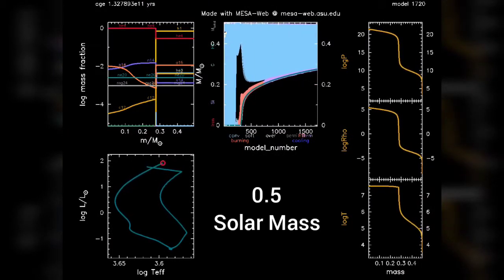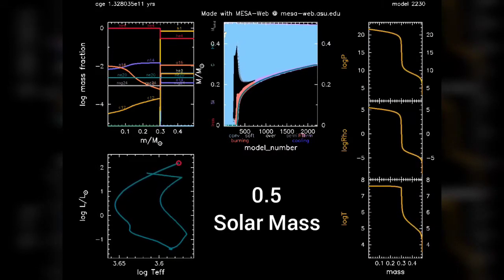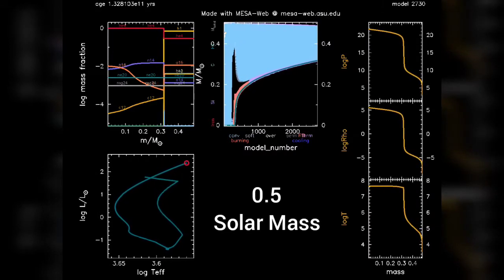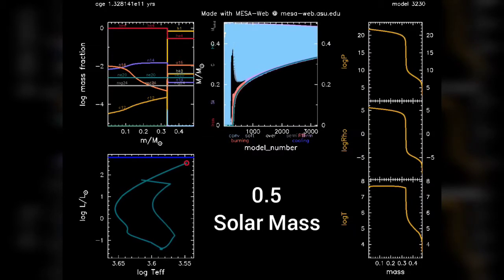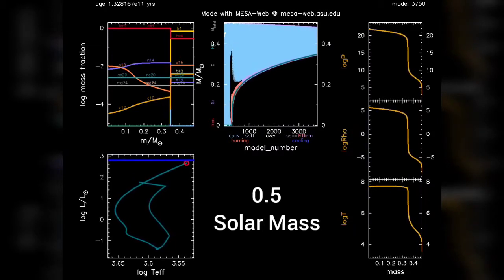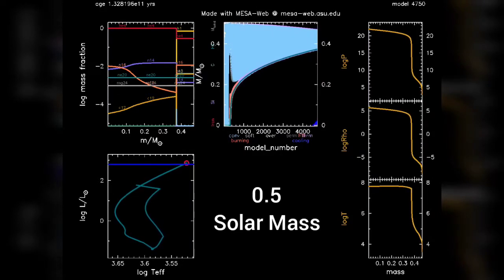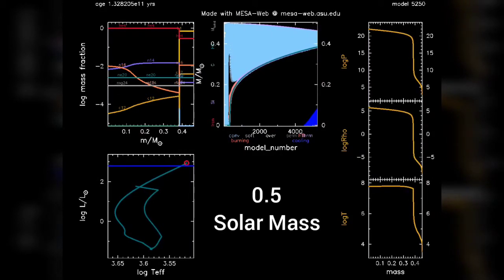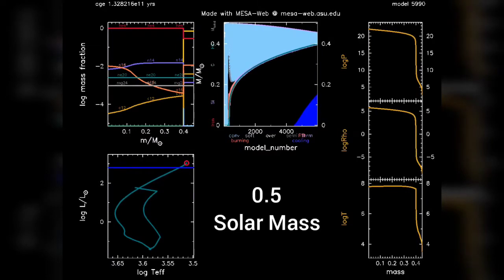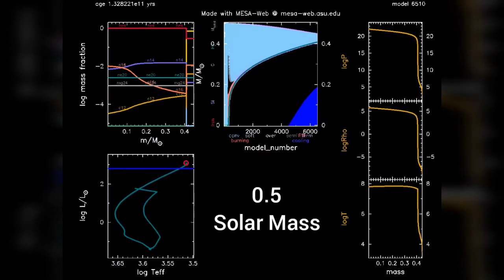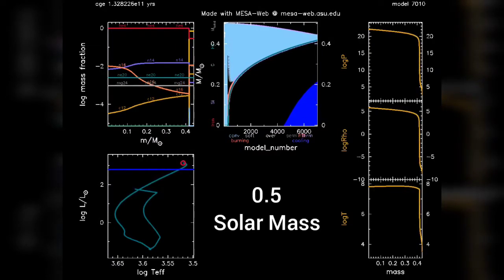This is the result from pre-main sequence to off-main sequence. On the top left we can see the age of the star as it is proceeding. Since it is a very small mass star, the age is very large, of the order of 10 raised to 11 years. On the top right we can see the model number, which is basically the time slice that we are observing.